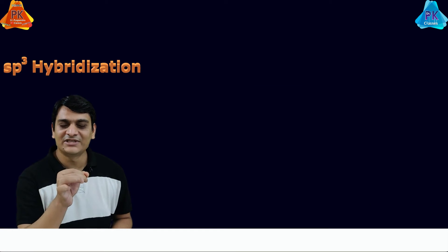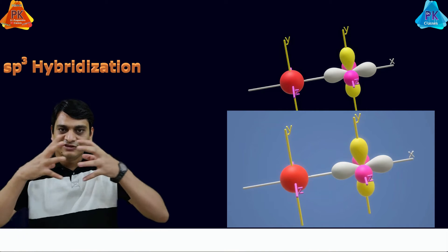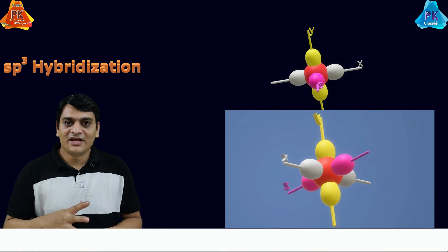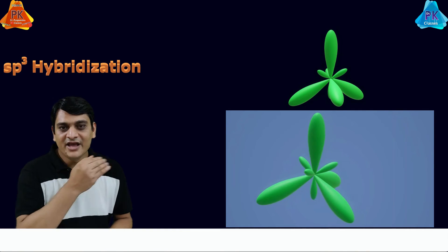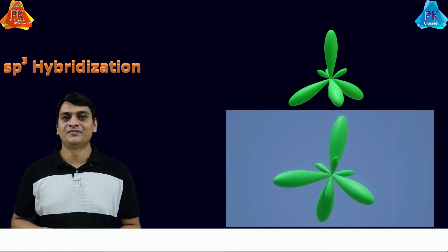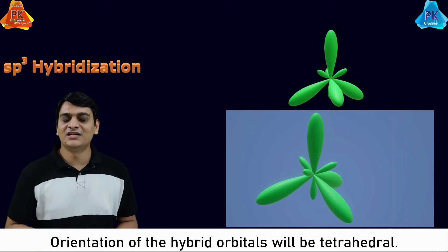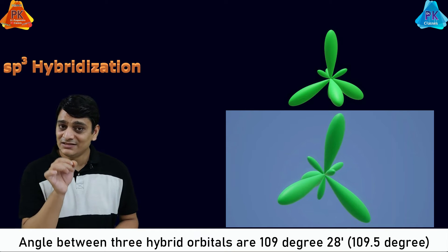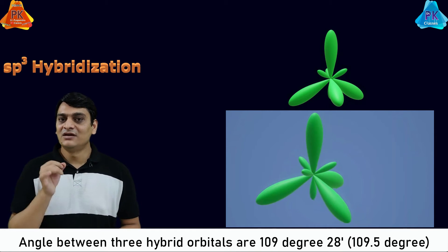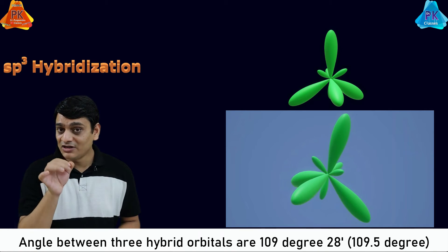Now coming to the 3D representation of sp3 hybridization. One s orbital and three p orbitals are mixed together to form 4 hybrid orbitals, represented here in green color. The electronic geometry around the central atom is tetrahedral, and the angle between all 4 hybrid orbitals is 109 degrees 28 minutes, sometimes also considered as 109.5 degrees — this is for the ideal condition.